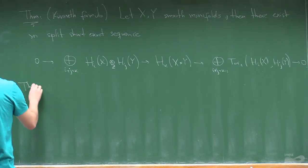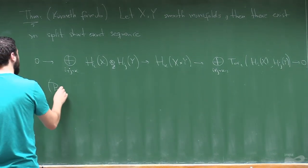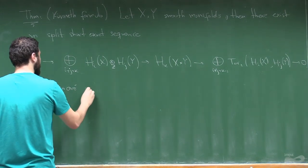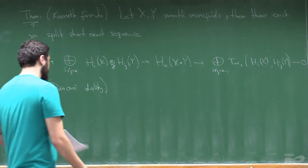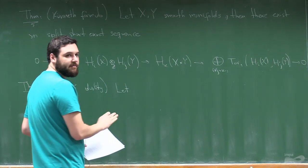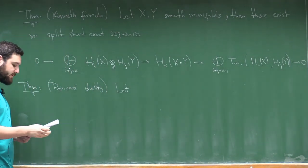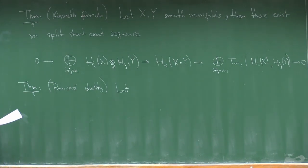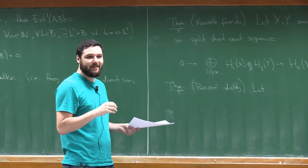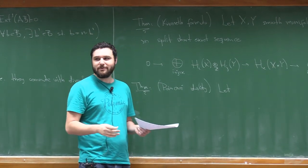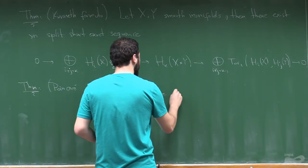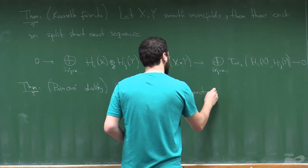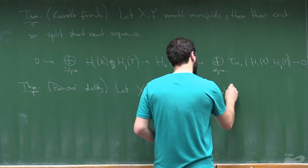Another theorem is Poincaré duality. There are a lot of versions of Poincaré duality; I will just recall some of them without giving too many details even in the formulation, because doing so would require introducing a lot of things. So let X be a compact, orientable, smooth manifold.